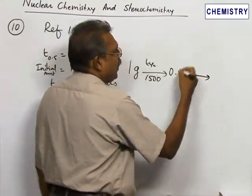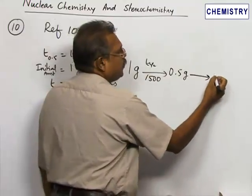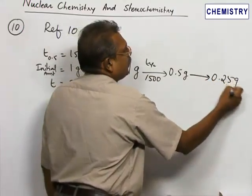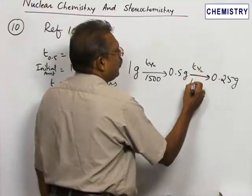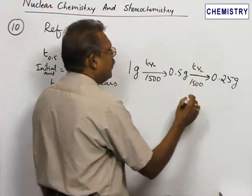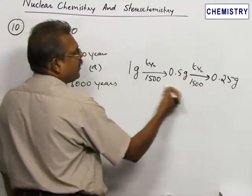In the second stage, the 0.5 undergoes again 50 percent decay to give 0.25 gram. That will take the second half-life period, another 1500 years we have to add. So in total, 1500 plus 1500 comes to 3000 years.